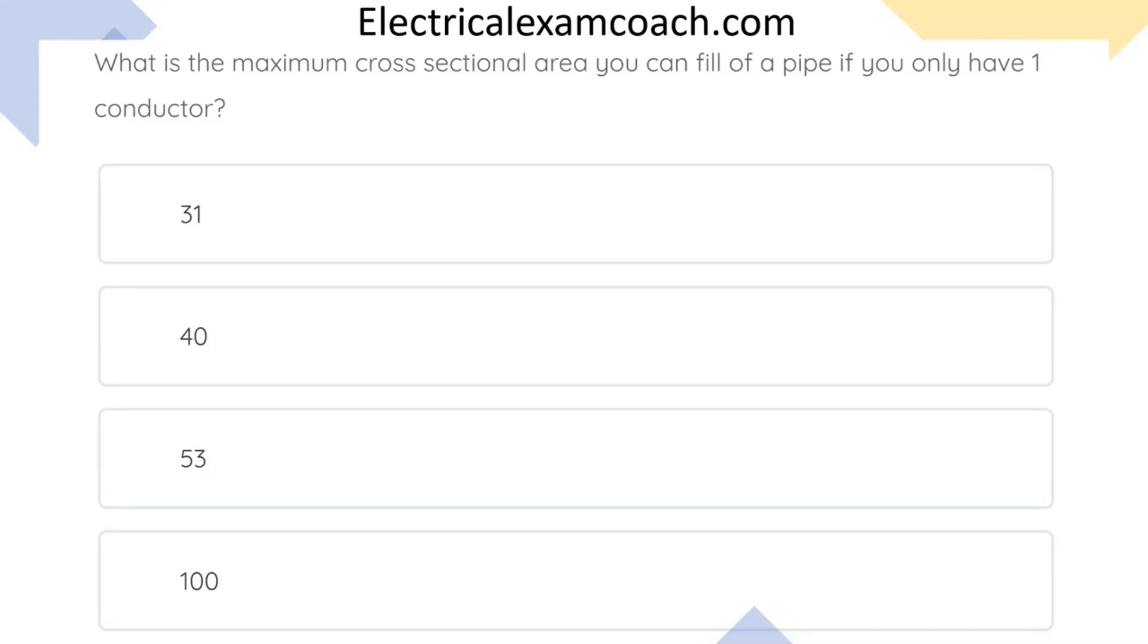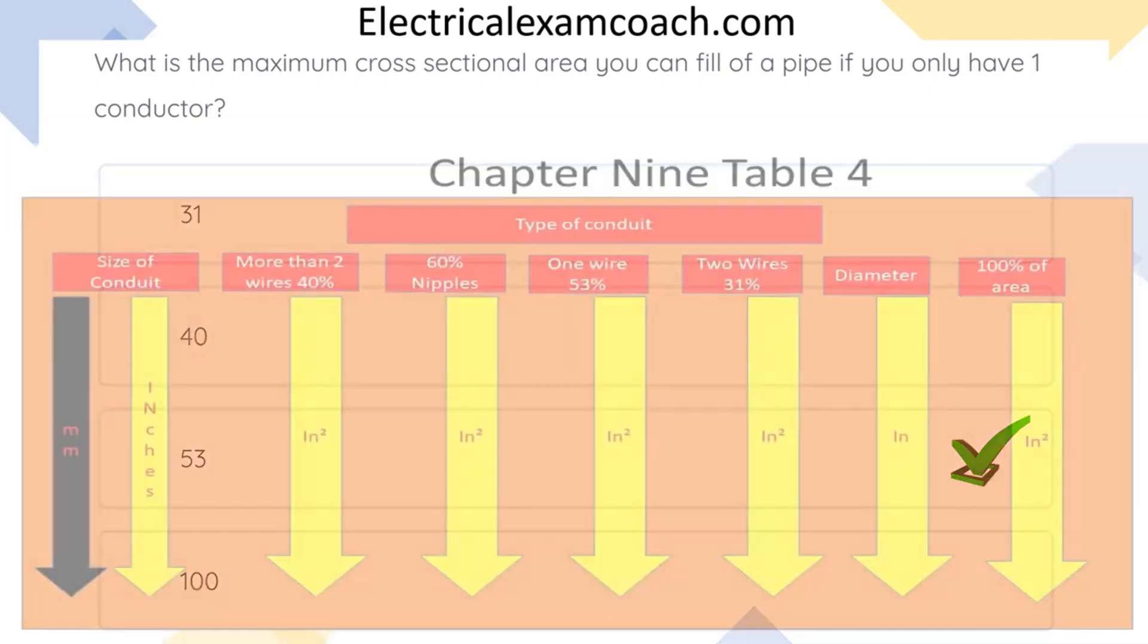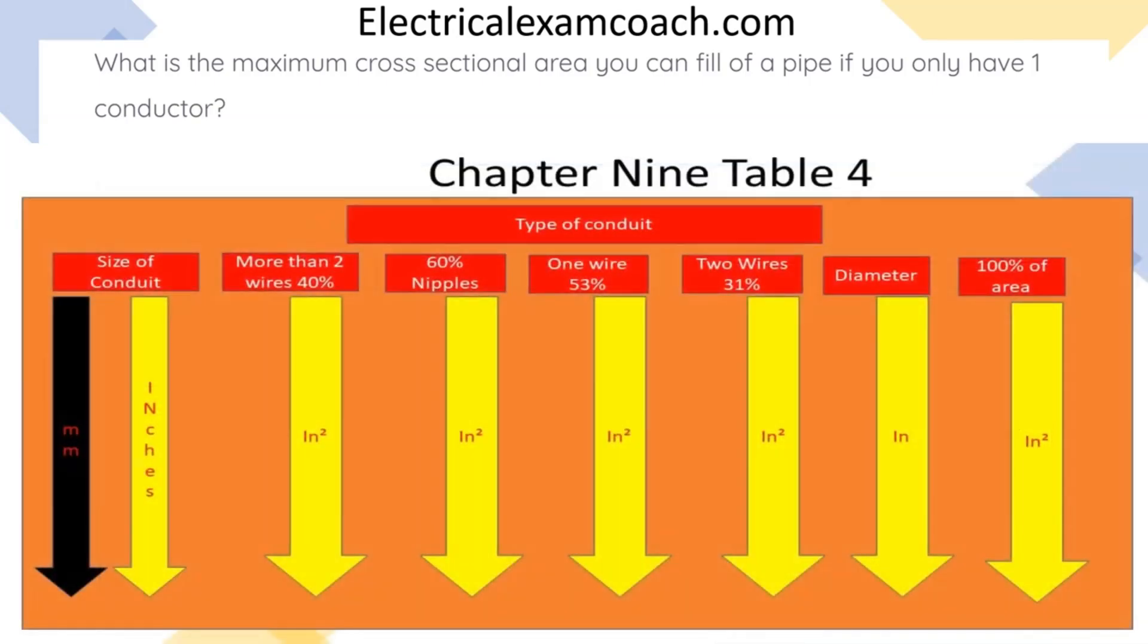What is the maximum cross-sectional area you can fill of a pipe if you only have one conductor? The correct answer is 53%. We're going to find this in the Chapter 9 Table 4 tables.